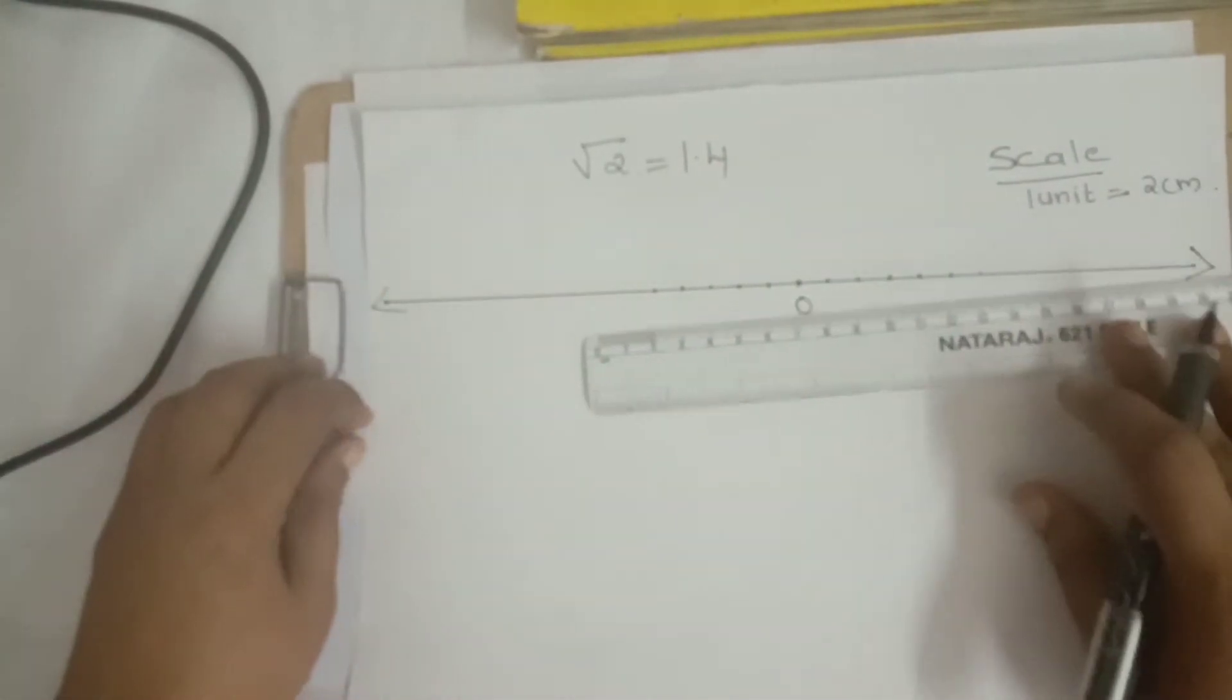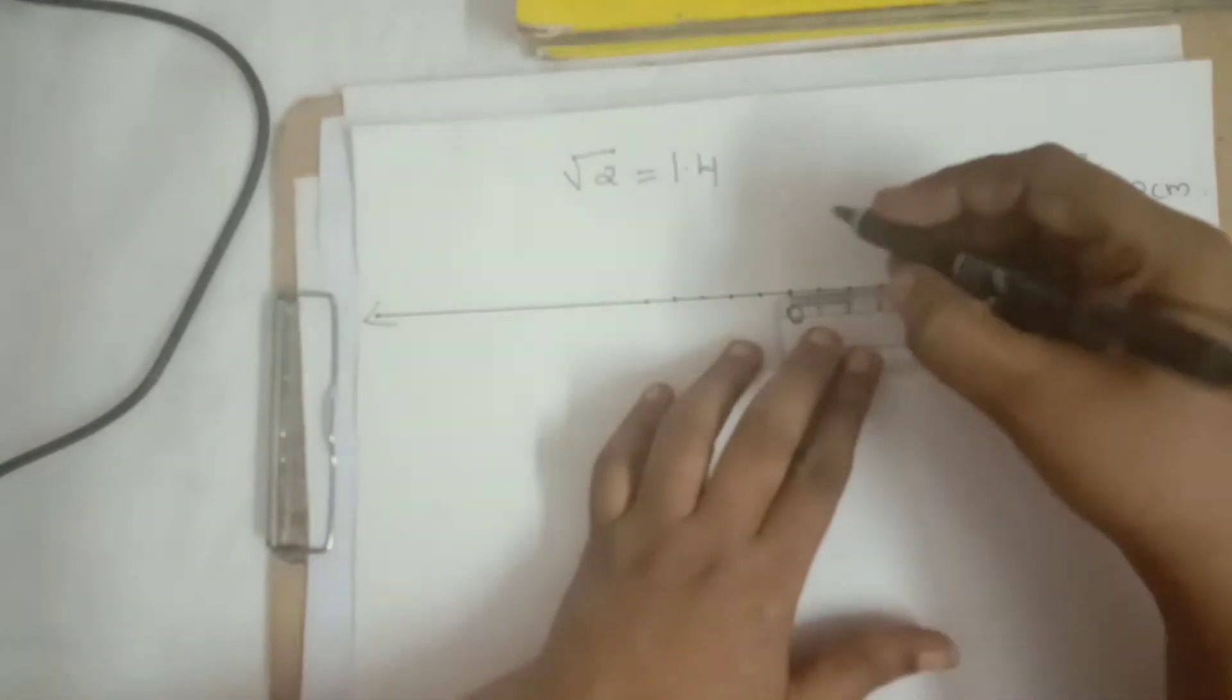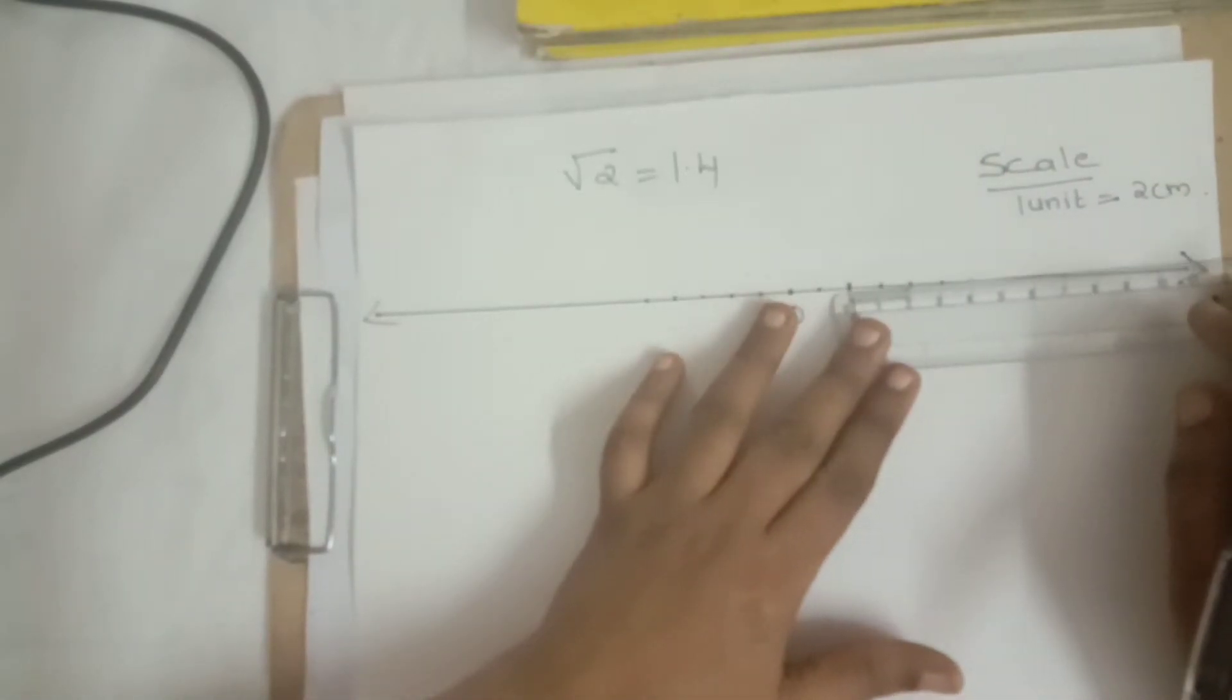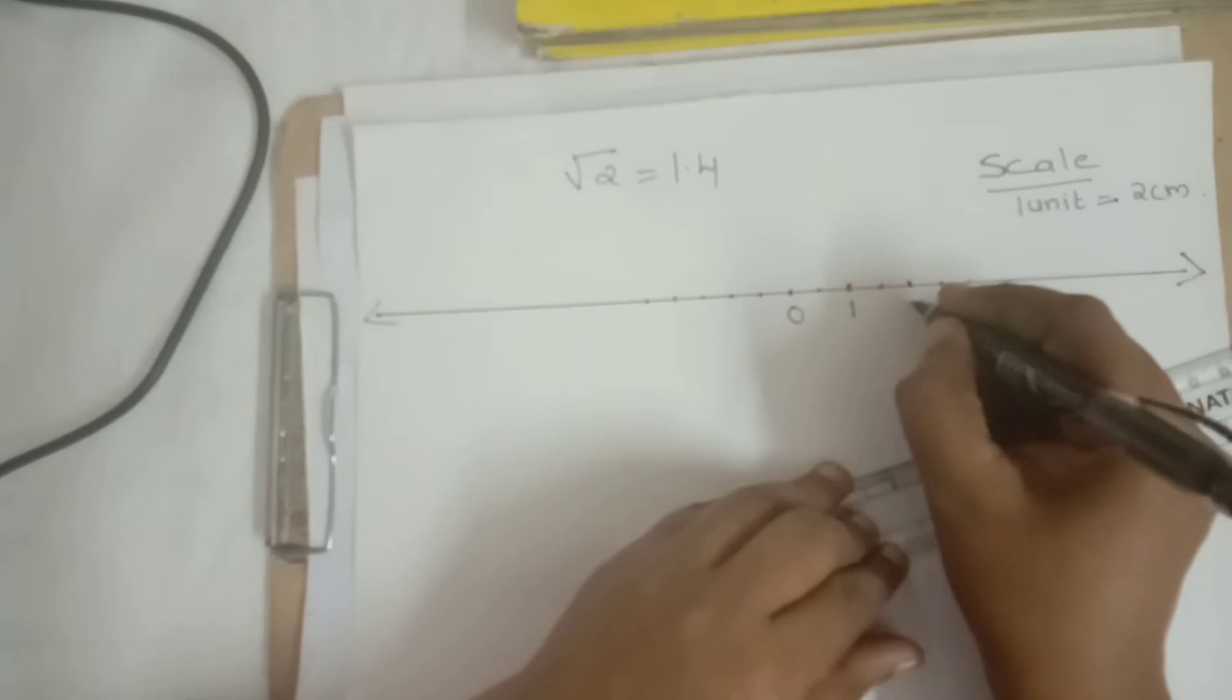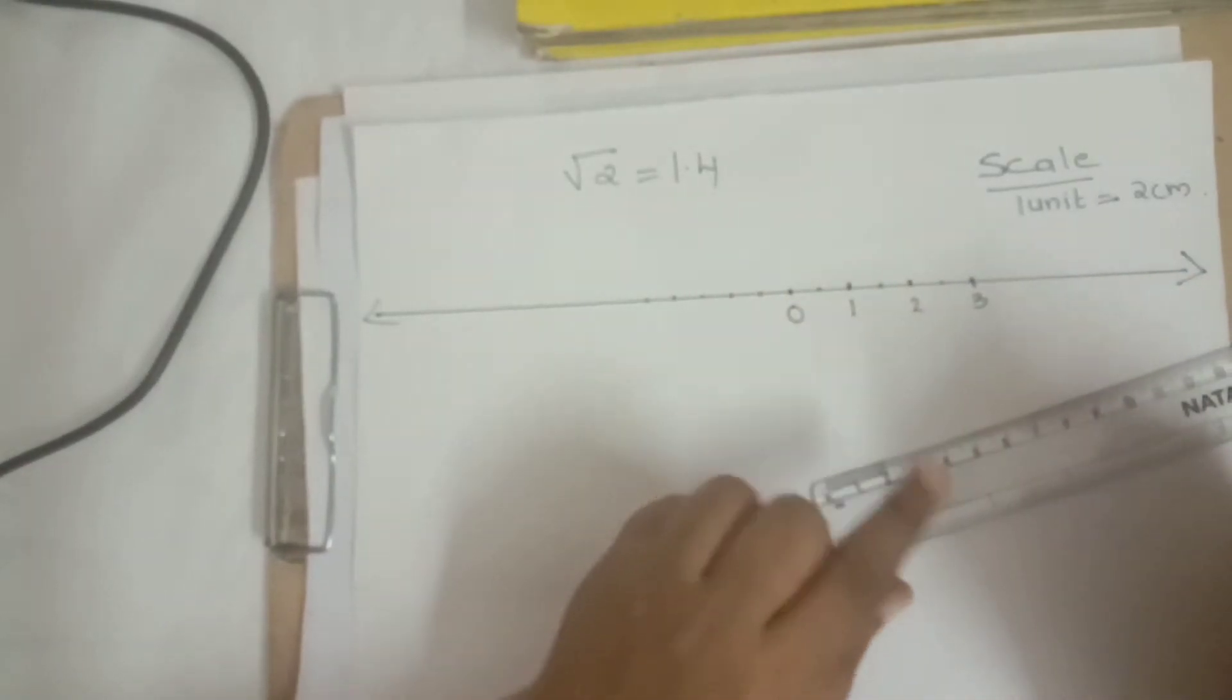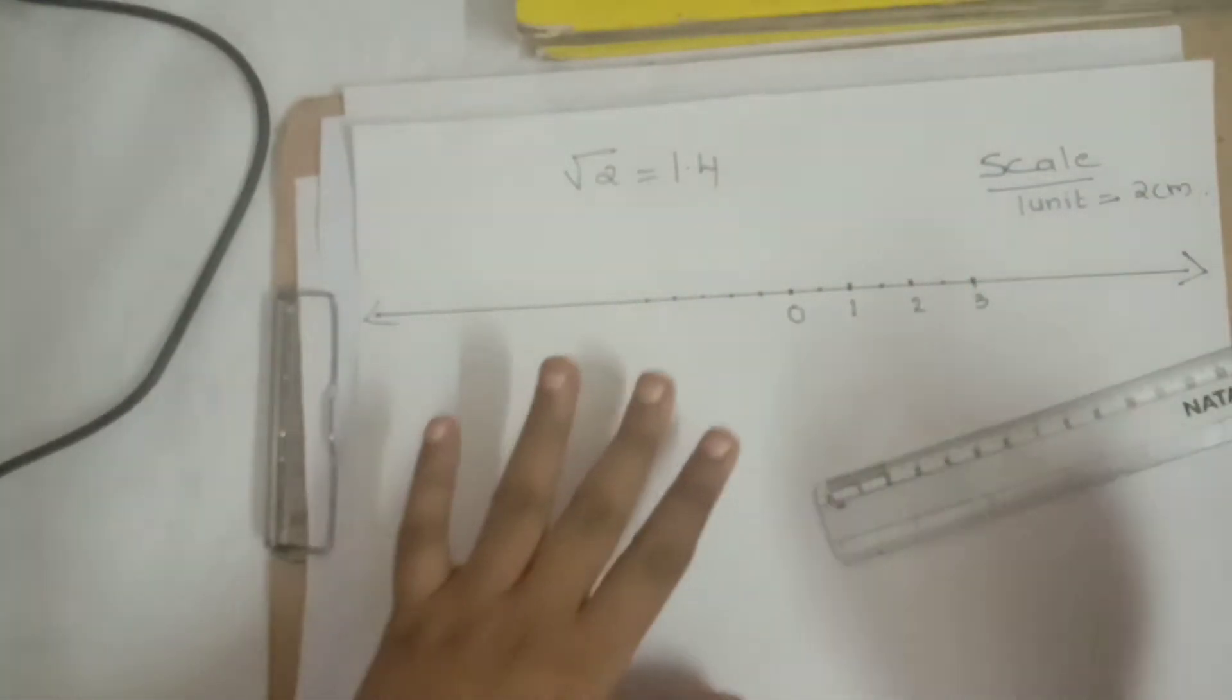Then, from 0 to 2 cm mark the point as 1. Next 2 cm mark the point as 2. Next 2 cm mark it as 3. So zero's right side is positive, that's why 1, 2, 3 mark it like this.